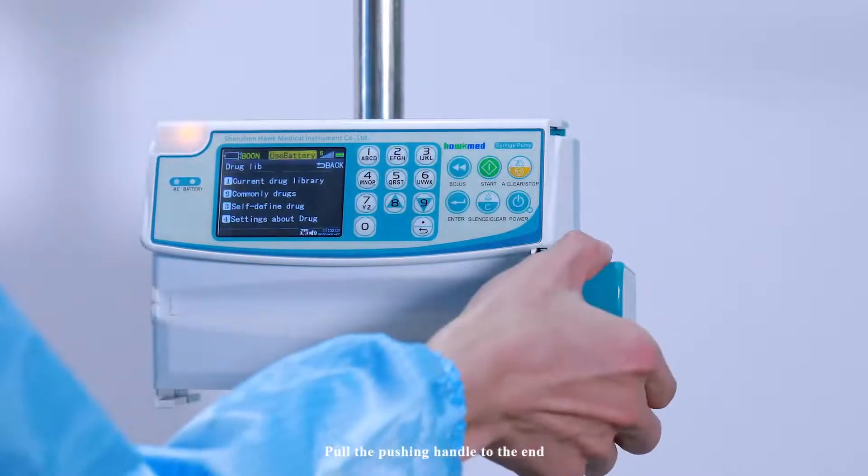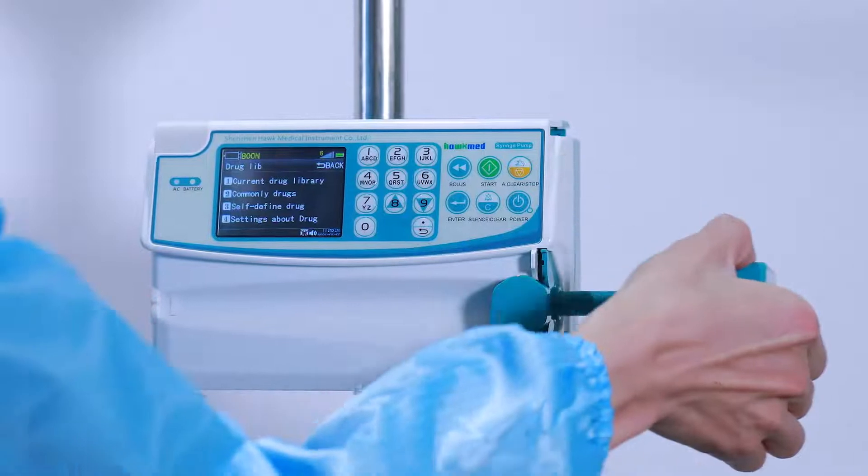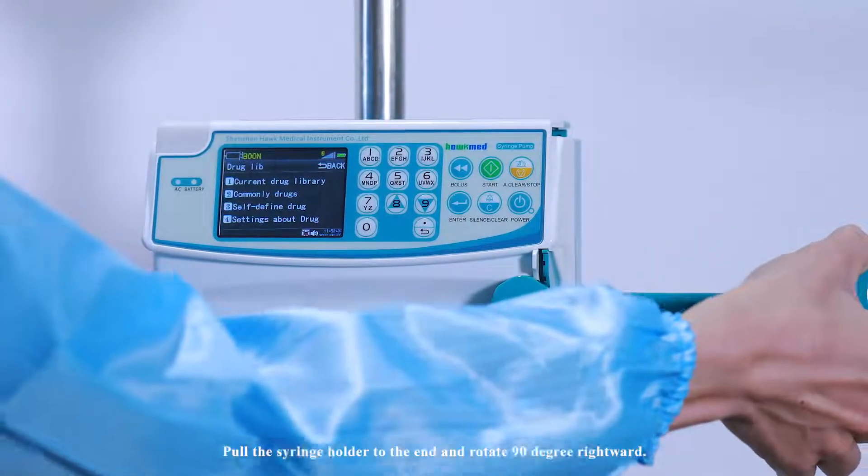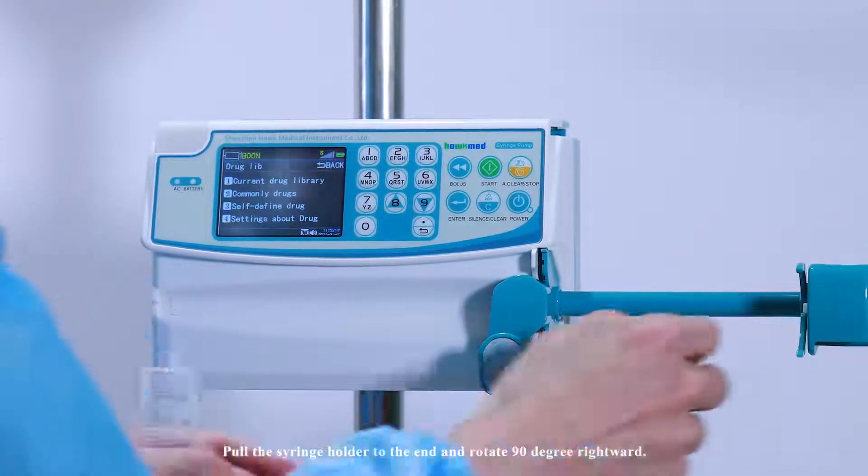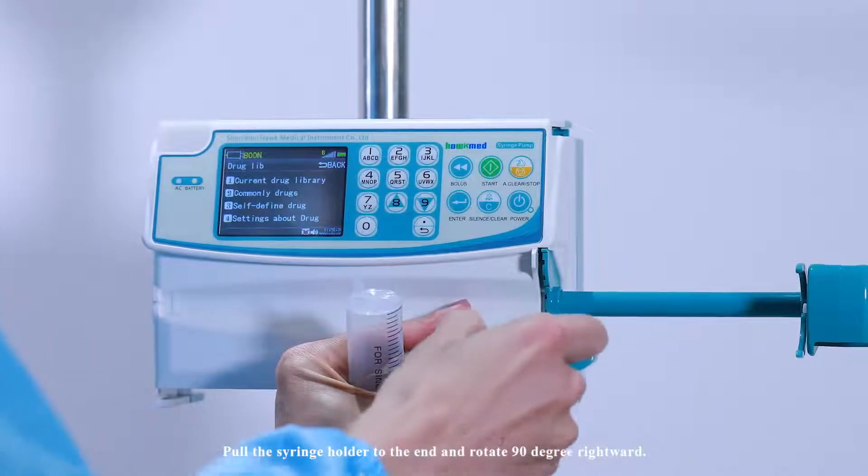Pull the pushing handle to the end. Pull the syringe holder to the end and rotate 90 degrees rightward.